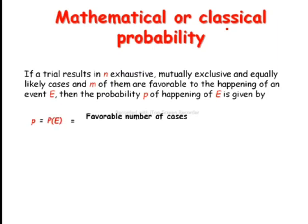If head occurs, that is one case, divided by the exhaustive number of cases. What are the exhaustive number? Head and tail. So it is given by M divided by N.